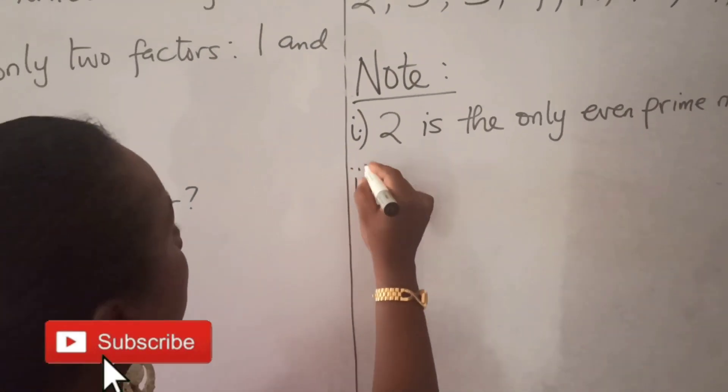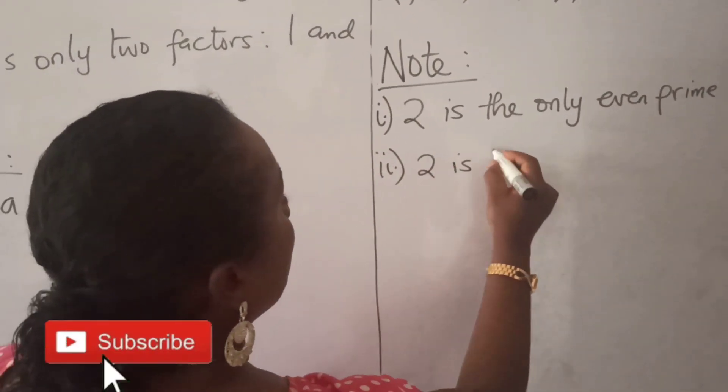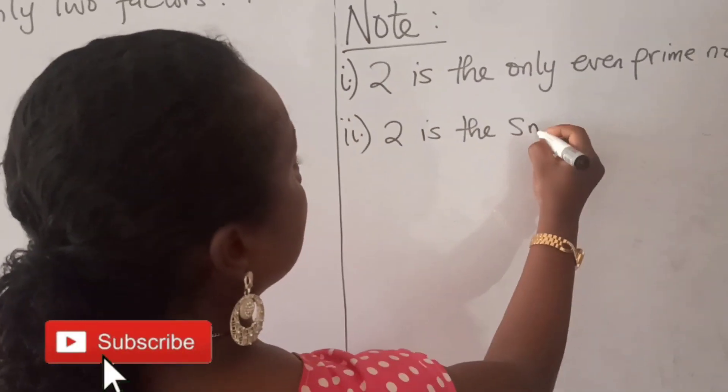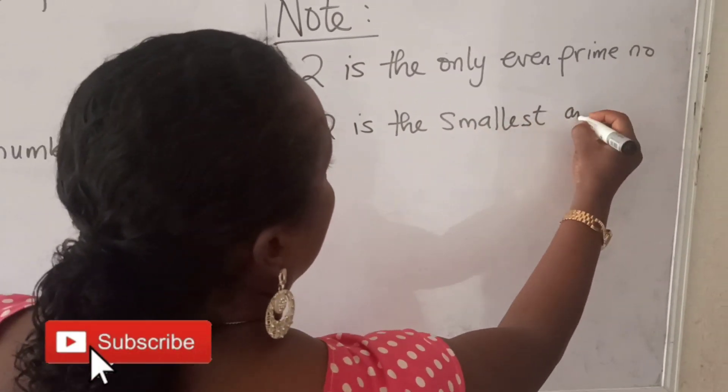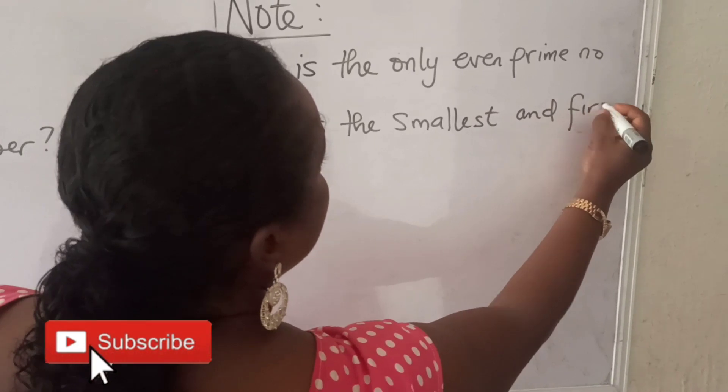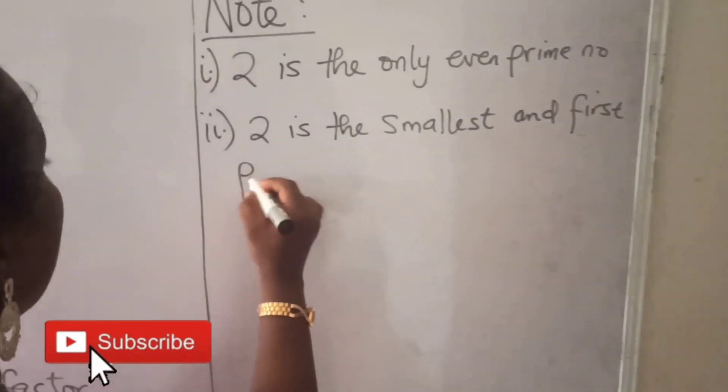Two. Two is the smallest and first prime number.